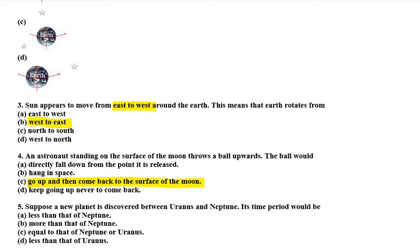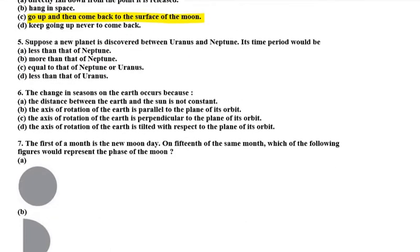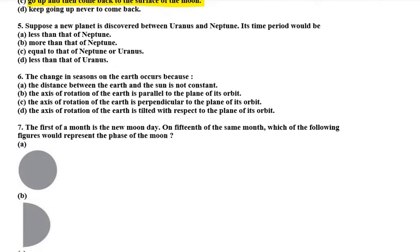Next is question number 5. Suppose a new planet is discovered between Uranus and Neptune. Its time period would be less than that of Neptune, more than that of Neptune, equal to that of Neptune or Uranus, or less than that of Uranus.